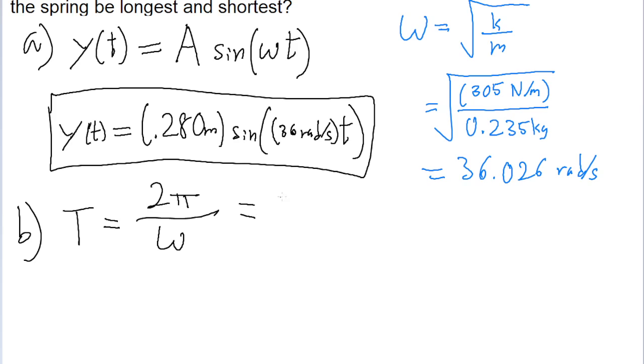So if we put this into a calculator, if we take 2 pi and then divide it by 36.026 radians per second, we get a period of about 0.17441 seconds.